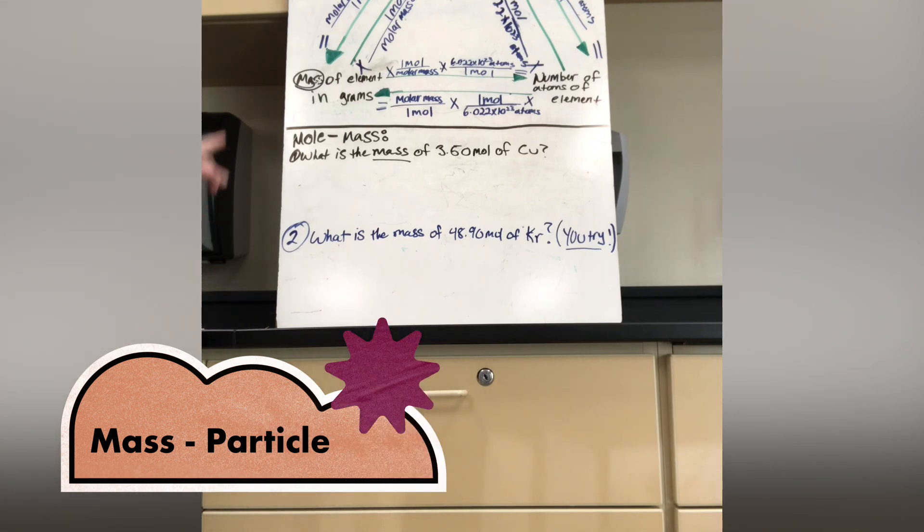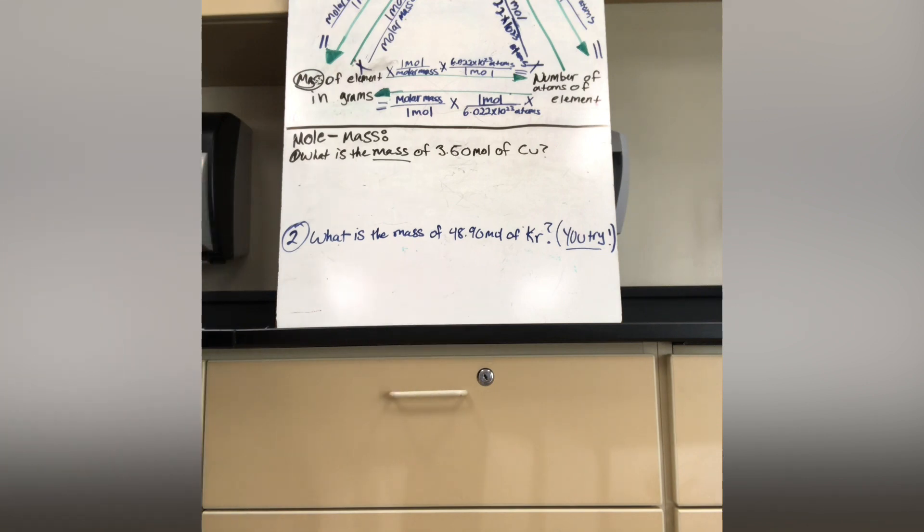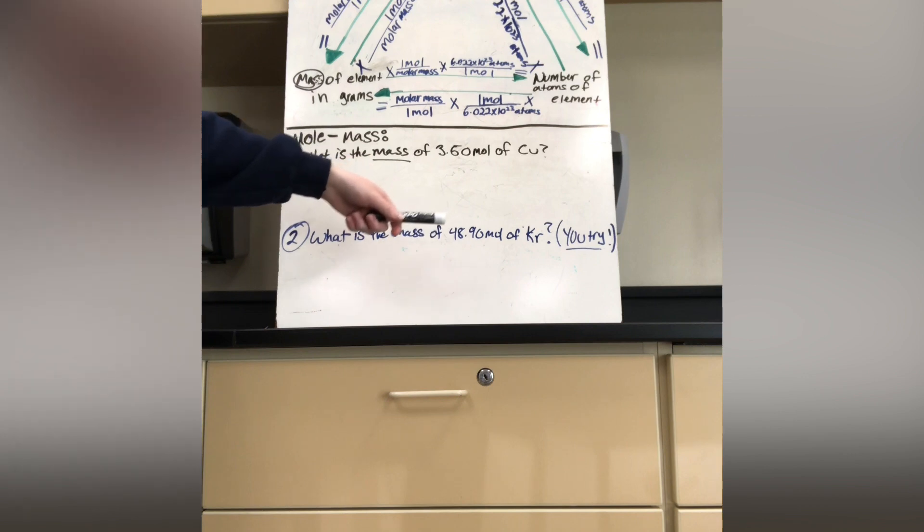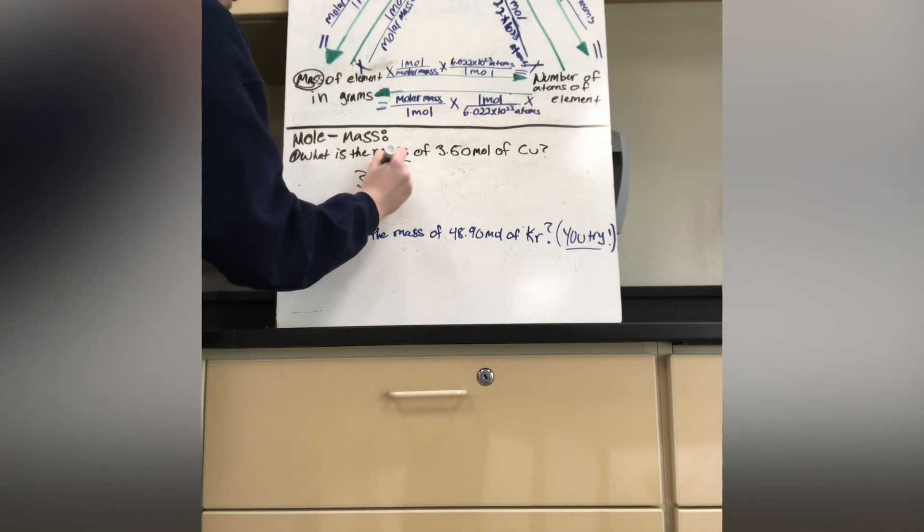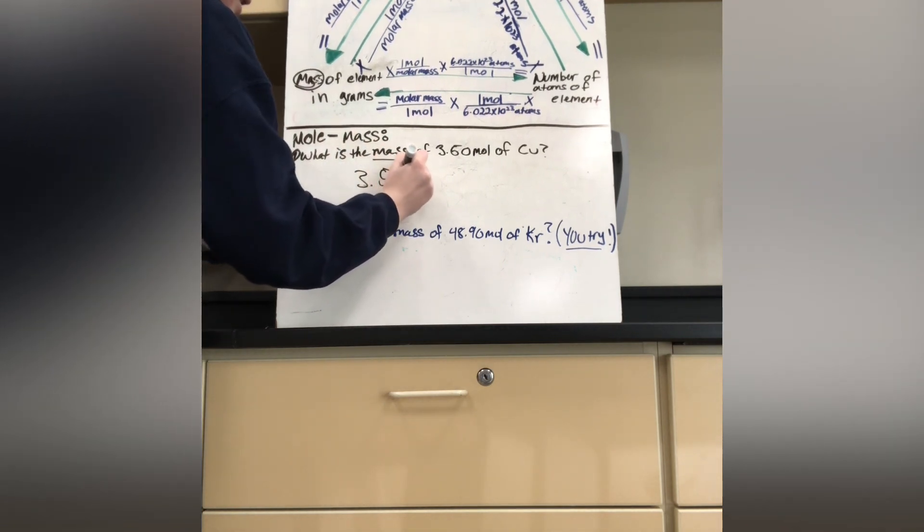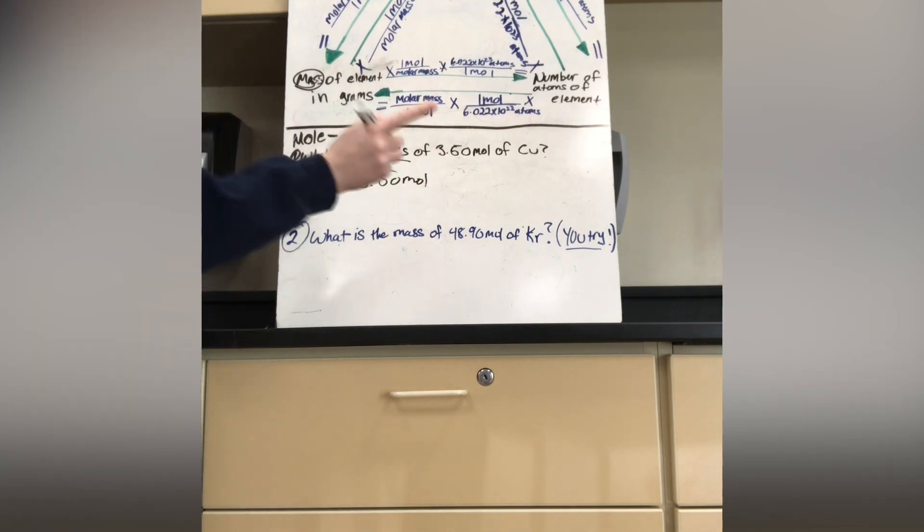All right. Now, we're moving on to mole mass problems. So I have this little sheet right here. So what is the mass of 3.50 moles of copper? So if we look up here, we have the amount of moles in this element. So we have to find the mass. So we're going down here.